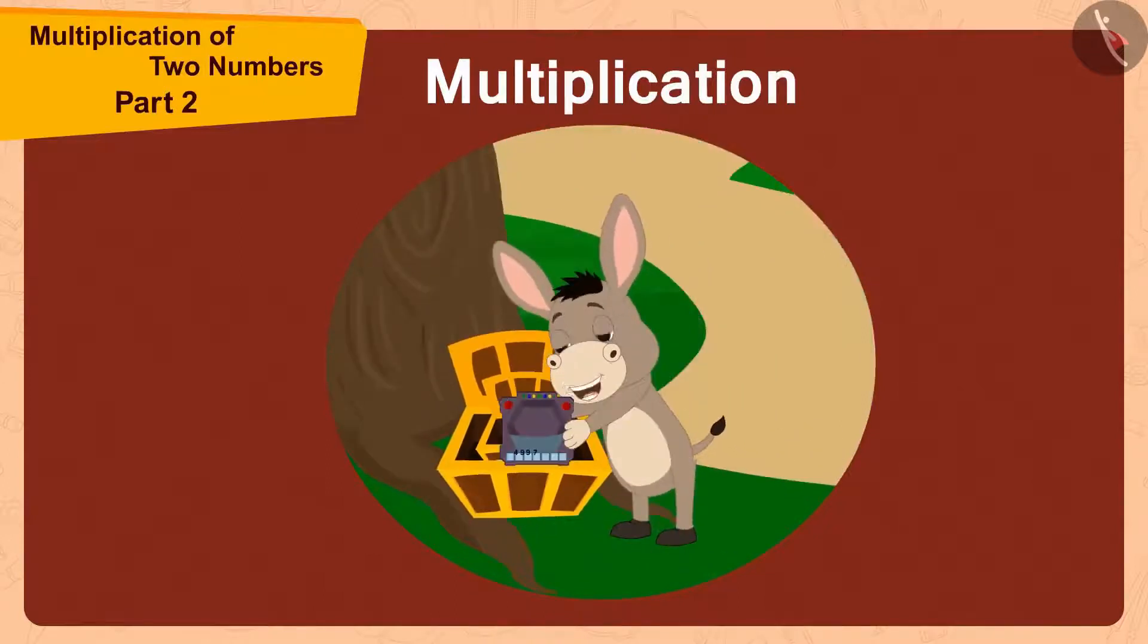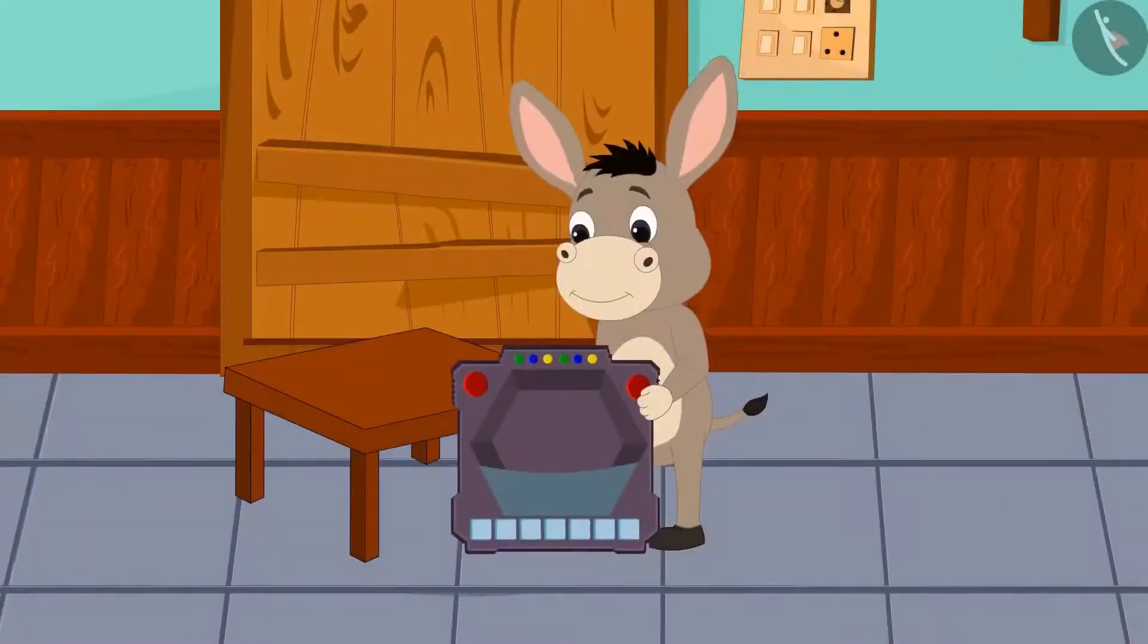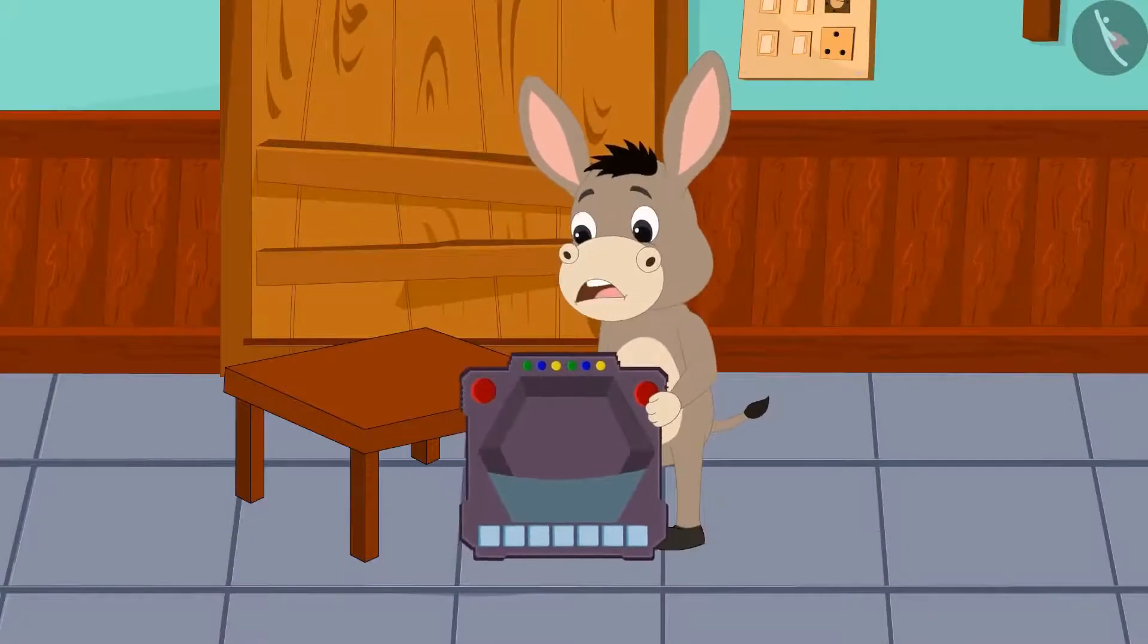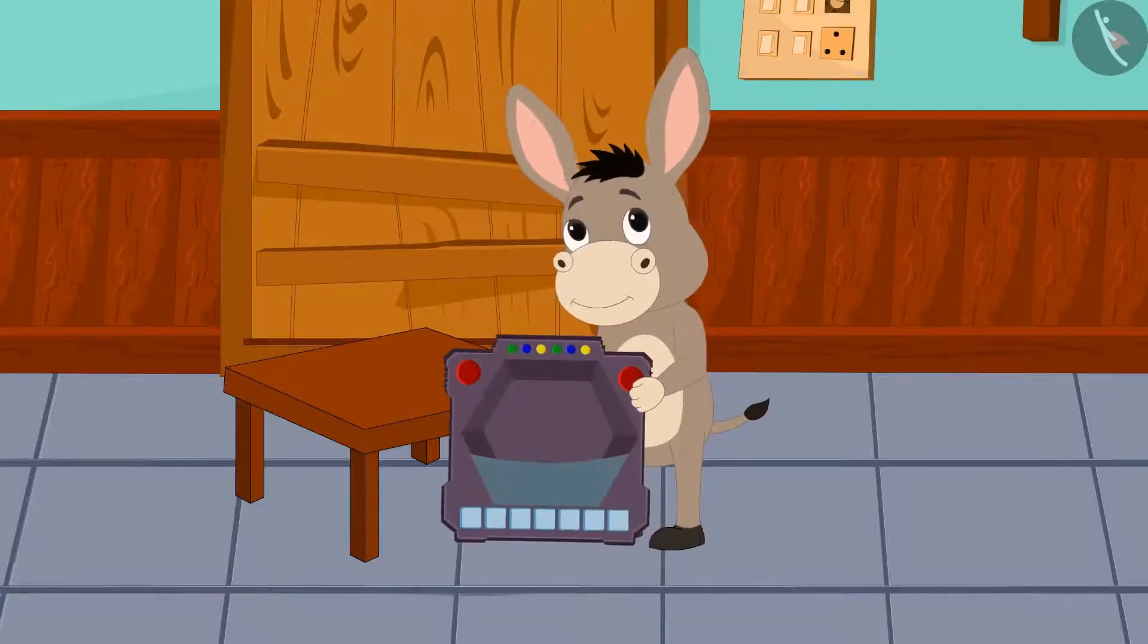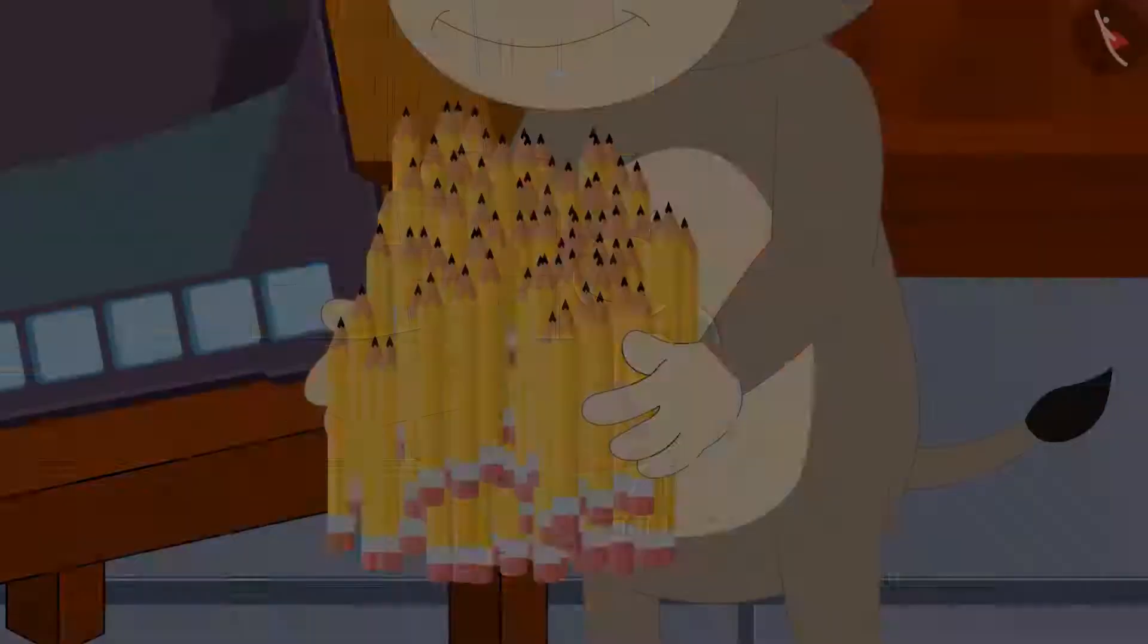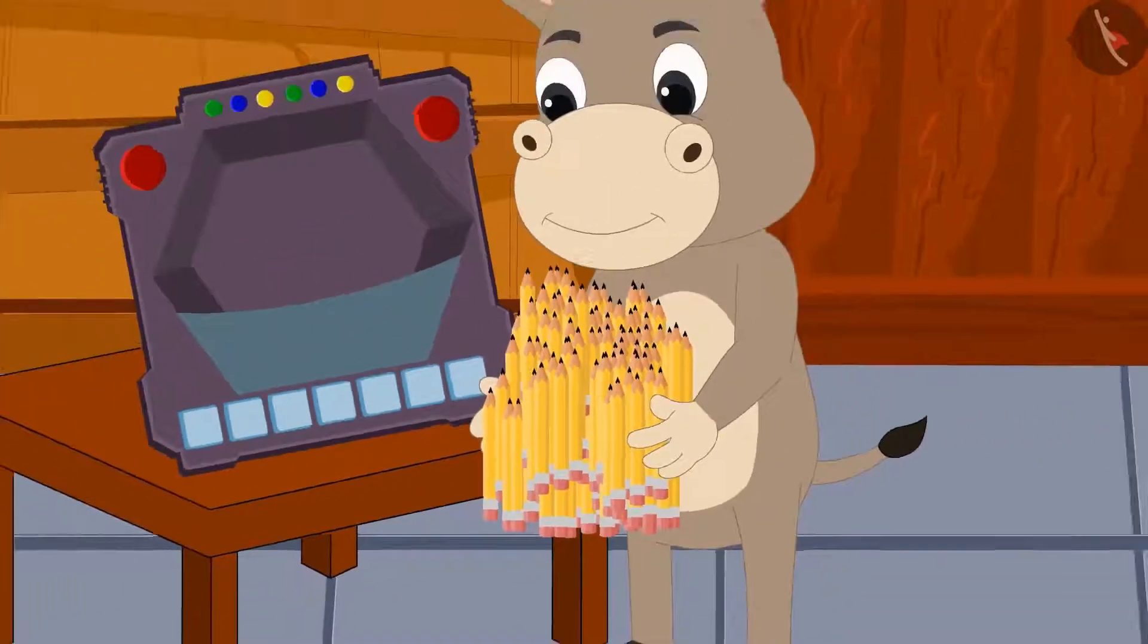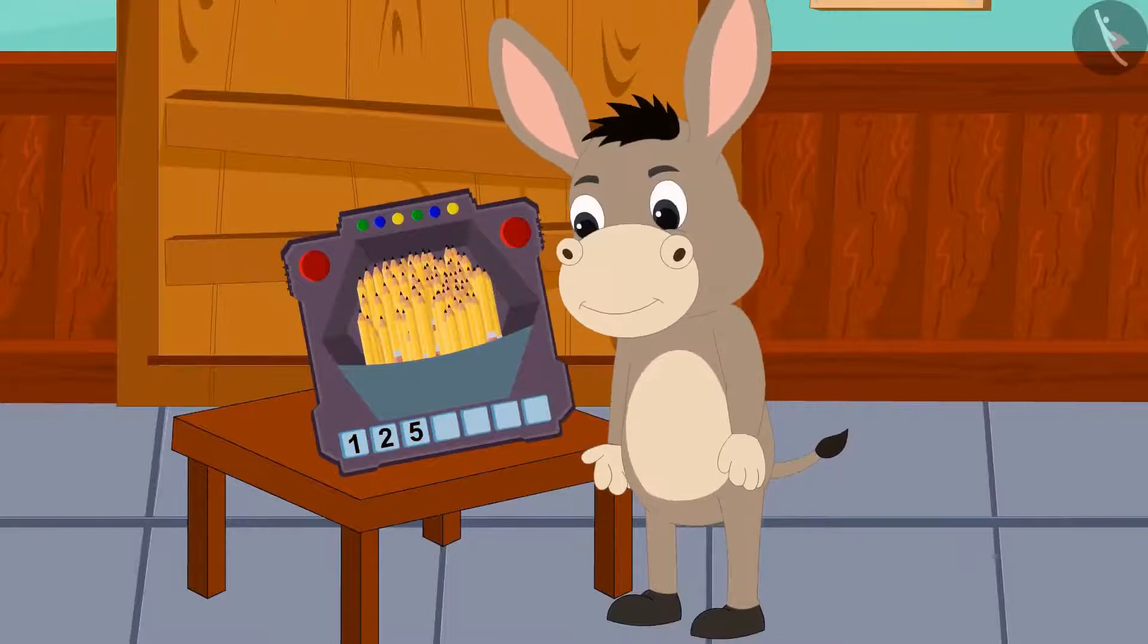Now let's see what is unique about this toy. Bhola noticed that this toy has a slot. He could not figure out the use of that slot. So Bhola used it as a stand and placed 125 pencils in it. As soon as Bhola put his pencils in that slot, the number 125 appeared under the slot.